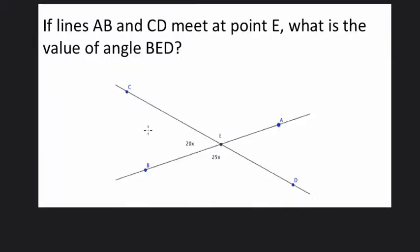In this problem they tell us that lines AB, that's this line right here, and CD, this line right here, meet at point E. Point E is right here, I'll label that in case you can't read this, that's point E.